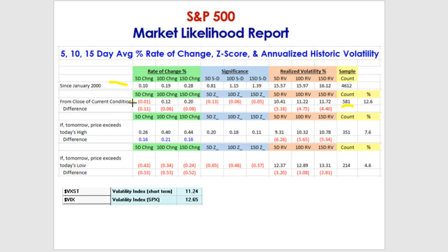So how significant is that? The Z-score tells us the percentage of a standard deviation up or down that that difference represents. Instead of going up a tenth, it actually has gone down a hundredth of a percent — a Z-score of minus 13% of a standard deviation to the downside. That's not very much — nothing to really hang your hat on.